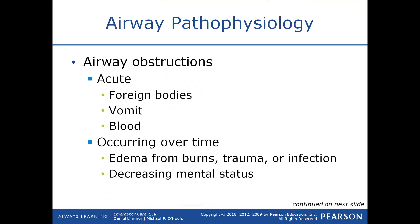Acute airway obstructions can be foreign bodies, vomit, or blood. Airway obstructions can also develop over time — for example, burns. If you breathe in superheated air during a house fire, you may burn your airways, and while they may be okay initially, over time they begin to swell. Trauma — such as striking your throat on a steering wheel during a motor vehicle collision — causes soft tissue swelling over time. Infections like epiglottitis cause the soft tissue around the epiglottis to swell progressively as the result of a viral or bacterial infection.